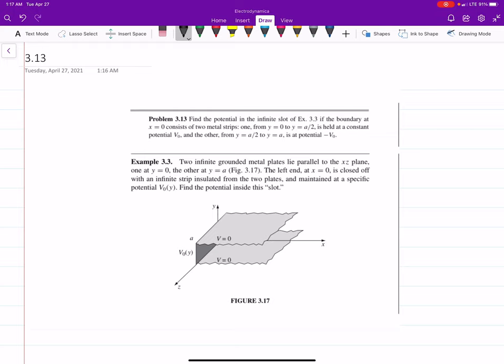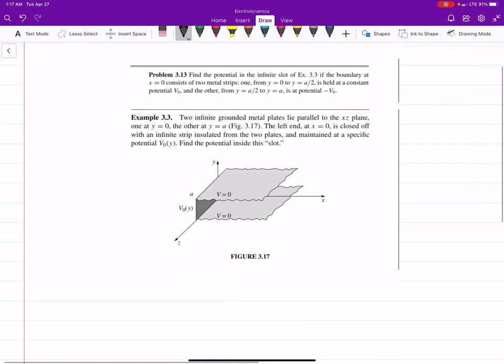So it says, find the potential in the infinite slot of example 3.3, if the boundaries at x equals 0 consist of two middle strips from y equals 0 to y equals a over 2, which has a potential V₀, and a over 2 to a, which has a potential negative V₀.